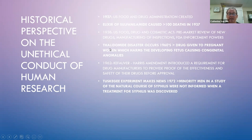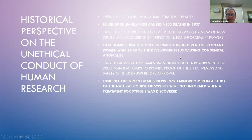In the 1960s, the thalidomide disaster occurred. This was a drug given to pregnant women that ended up causing great physical harm to the fetus. These women were told it would be used for nausea and morning sickness, and the results were catastrophic for their babies. As a result, in 1962, a requirement was introduced for drug manufacturers to provide proof of effectiveness and safety before approval — aligning with the trial phases discussed earlier.